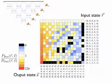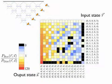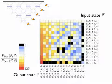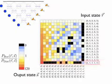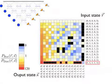In general, bosons favor final states with many particles per mode, shown on the left-hand side of the plot. However, there are also exceptions to this rule. The strongest interference pattern emerges when the particles are evenly distributed over the input modes.